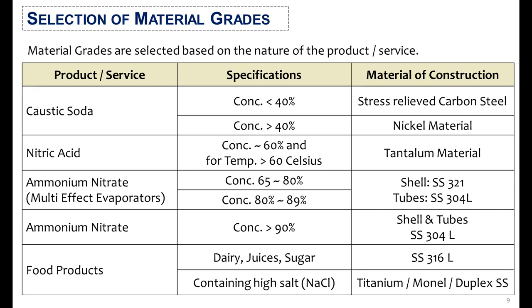For ammonium nitrate with concentration greater than 90%, both shell and tube material can be 304L stainless steel. For food products like dairy, juices, and sugar, material grade 316L stainless steel is selected. But if the food products contain high salt such as sodium chloride, the material should be titanium or duplex stainless steel.